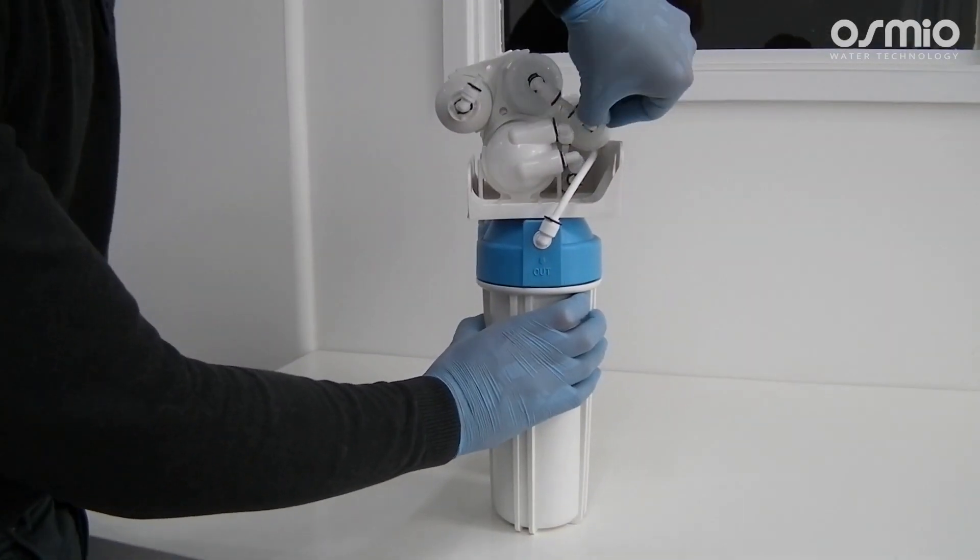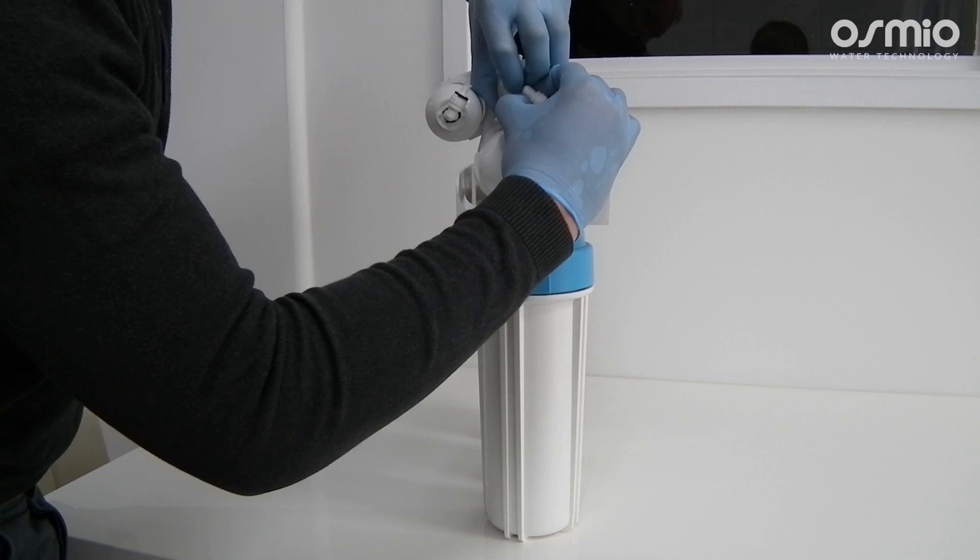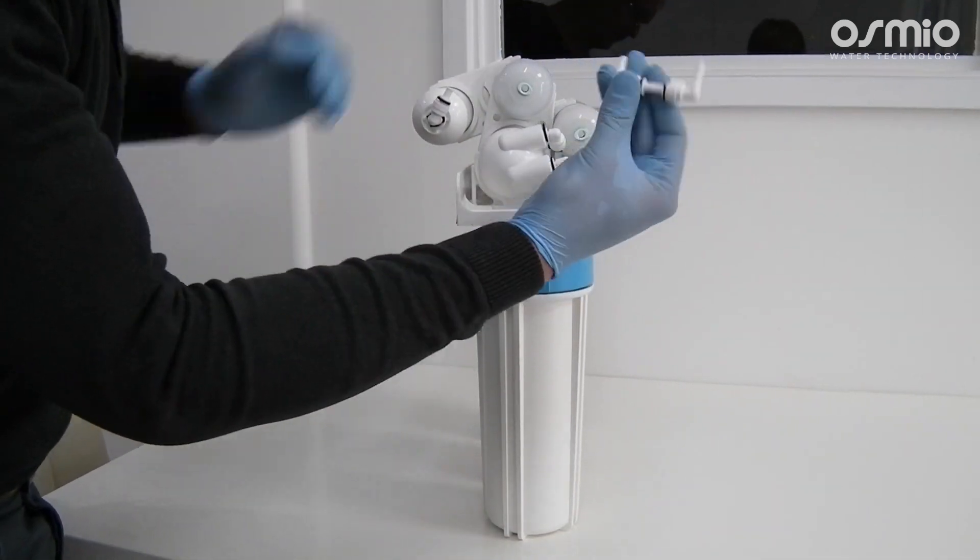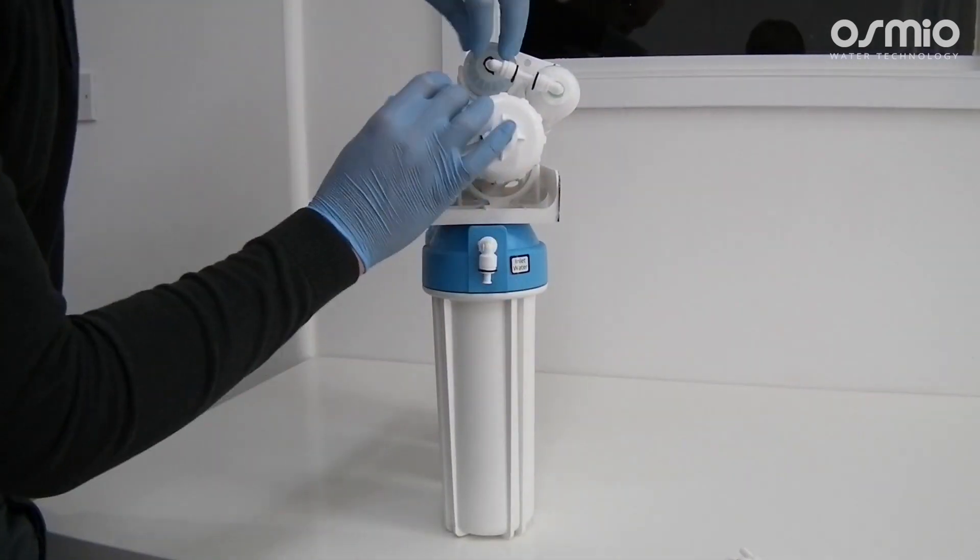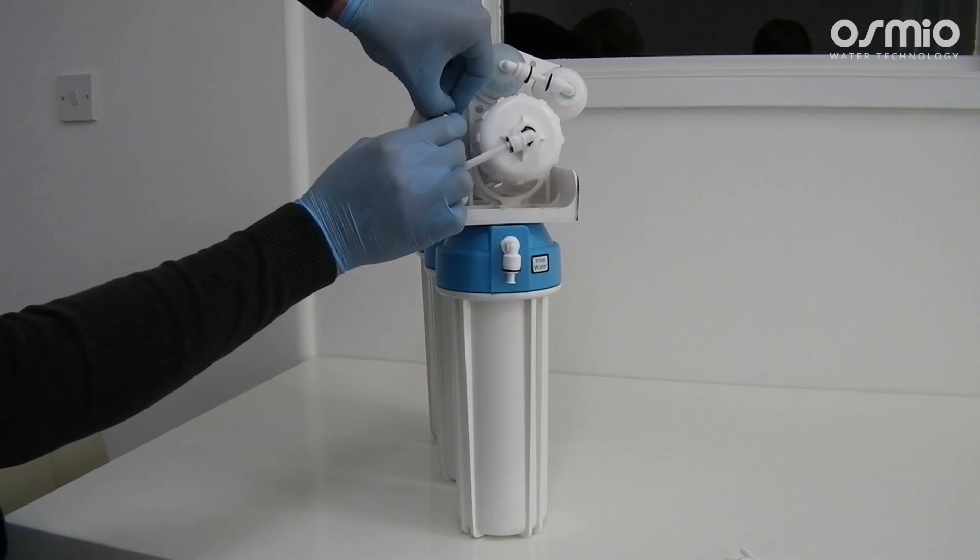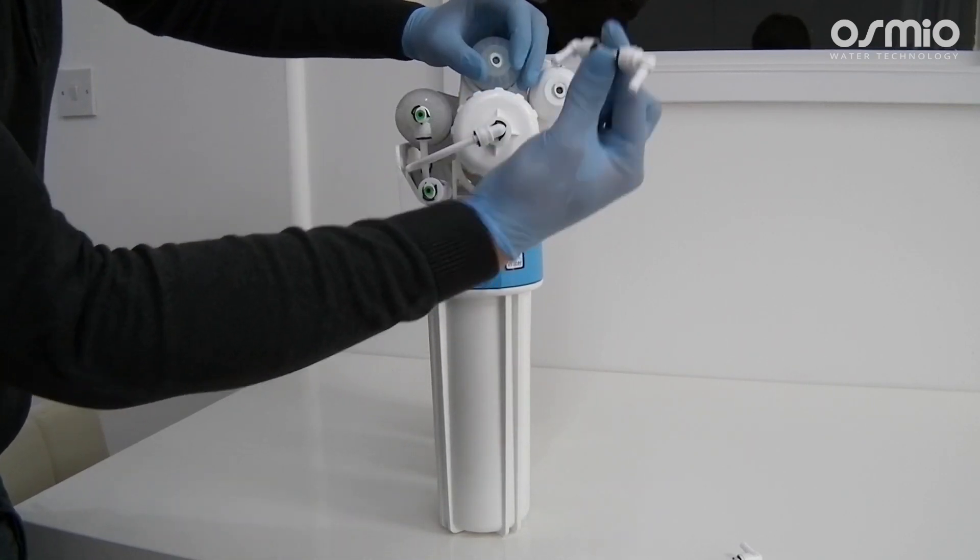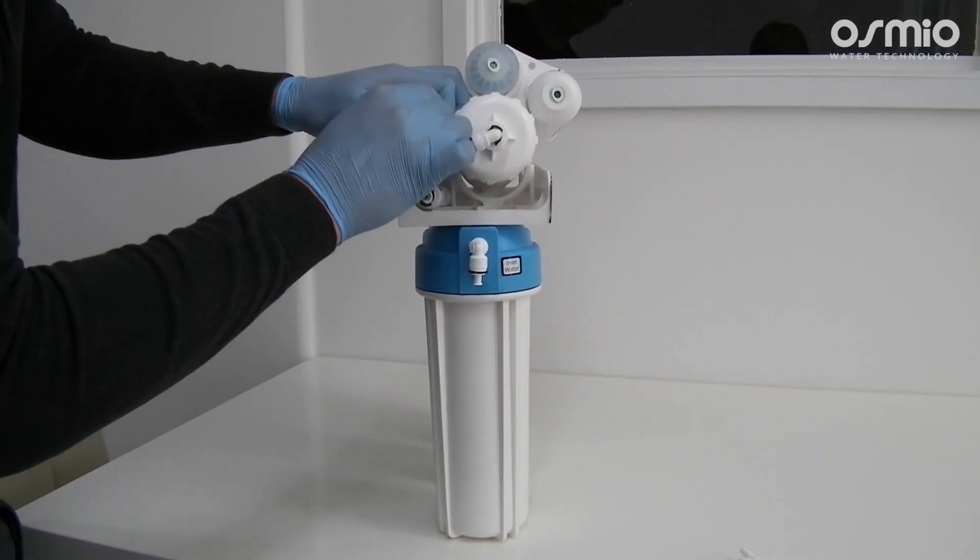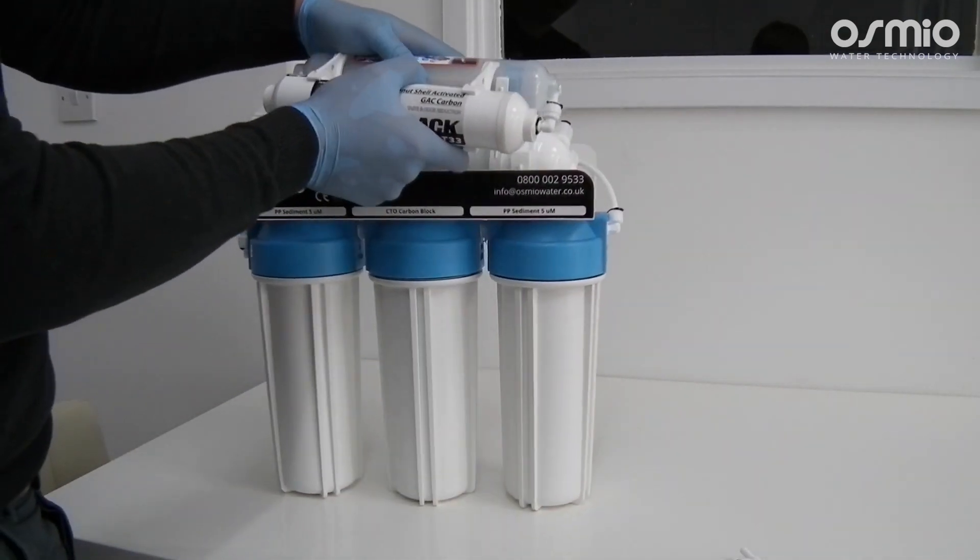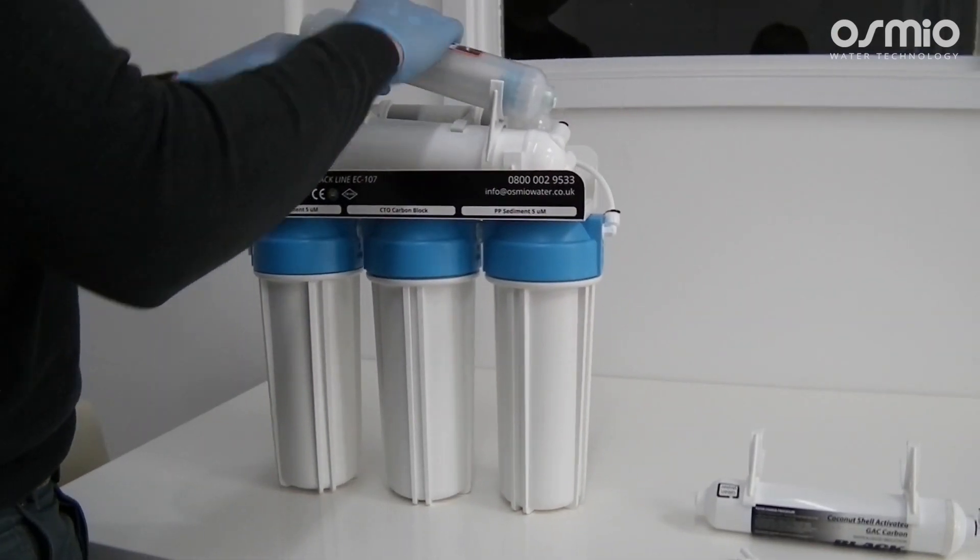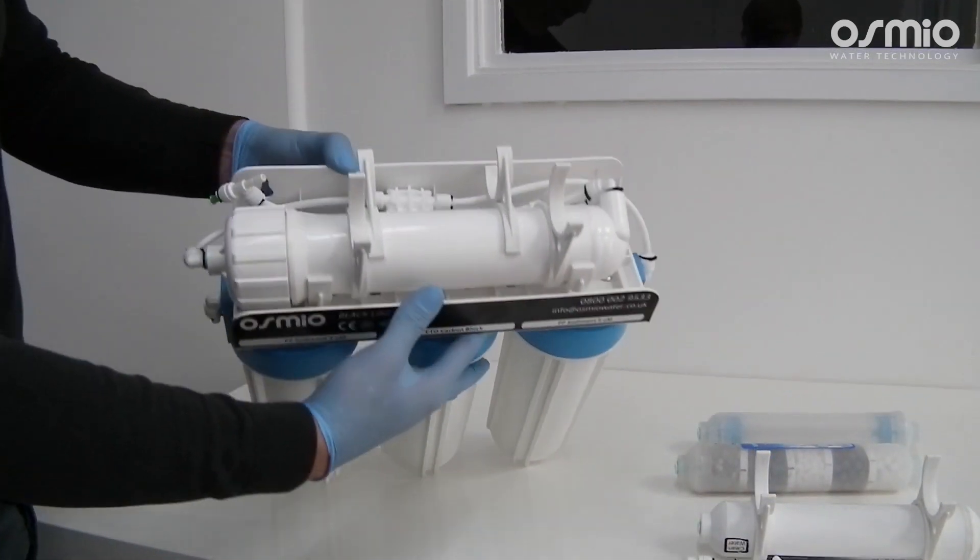Now we'll have a look at how to replace the three post filters at the top. First, make sure to turn off the feed water valve, close the valve on top of the tank, and open the tap to let out excess pressure. Then remove the black clips from both sides of the filters to be able to open push fit connections. Remove all the elbow fittings from the inline cartridges, and it should be fine now to remove all three cartridges from the unit.